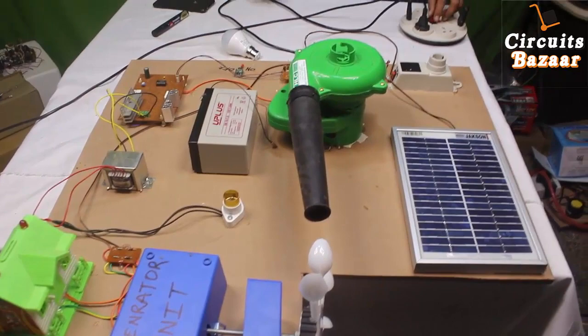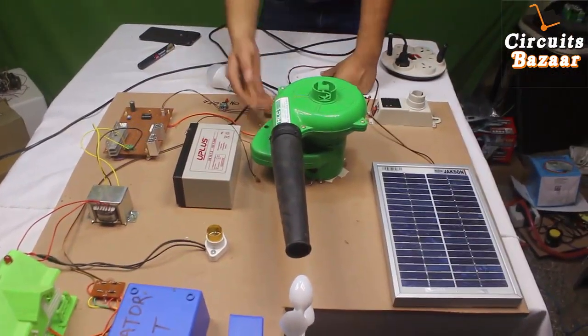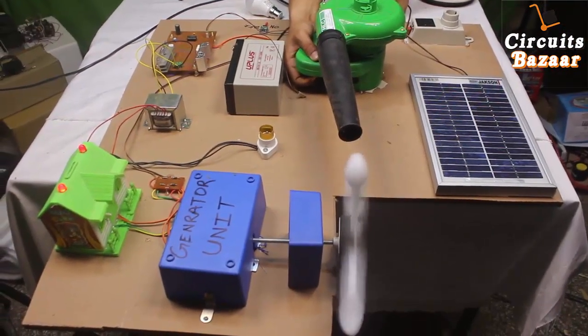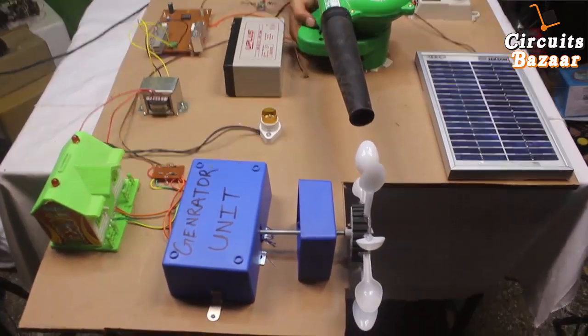This is the power to this unit which is throwing high power air. Now you can see that the LED is glowing because of the high wind power.